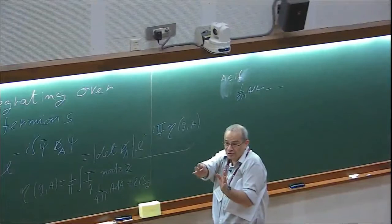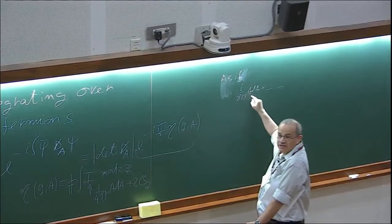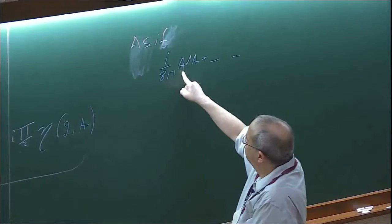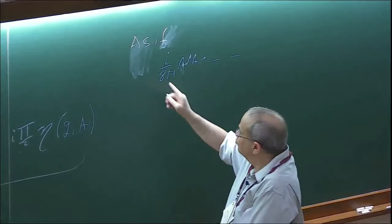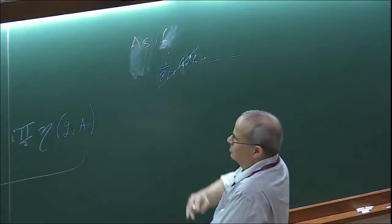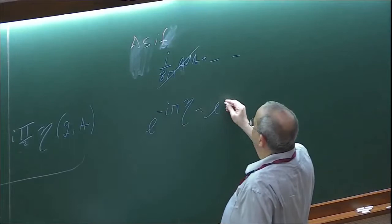I'll focus on the dependence on A. Naively, the phase is i over 8π ADA plus a gravitational term — but that's not right. That's not well defined. The thing which is well defined is 1 over 4π. In other words, e to the plus or minus i π ADA can be written as an allowed term, as a Chern-Simons term, using the definition. But the correct answer has a factor of 2 in the denominator — a 1 over 8π — and that's not an allowed term.